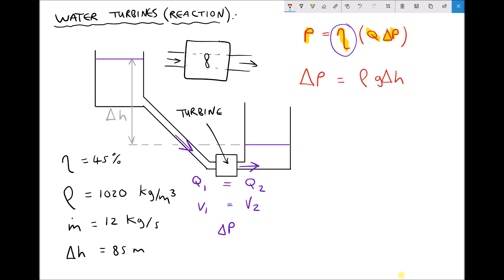Therefore in this scenario our change in pressure is going to be the density of the fluid, 1020, times gravity times our change in height of 85 m, giving us a change in pressure equal to 850,527 pascals. I'm going to leave that in SI units because we're going to be reusing that value in a moment.